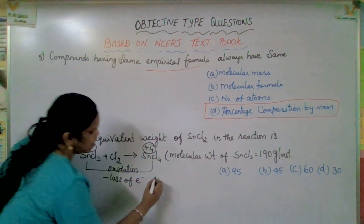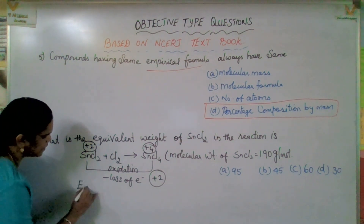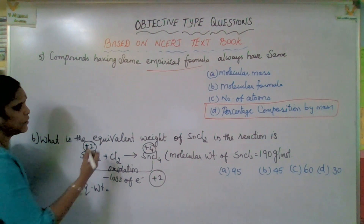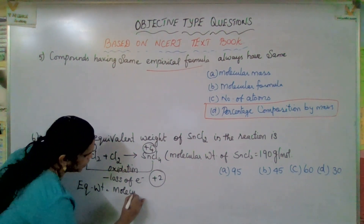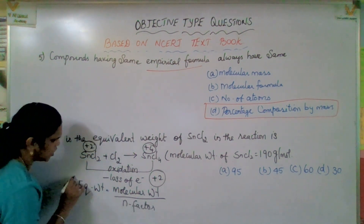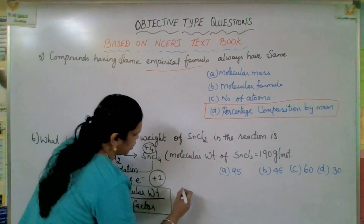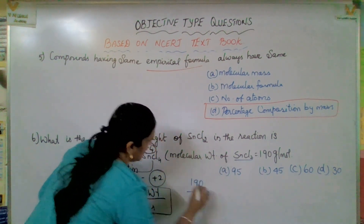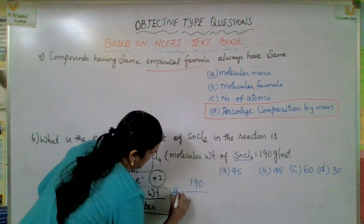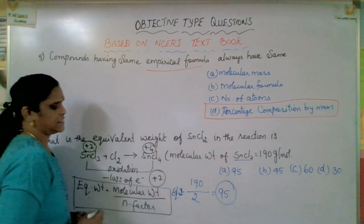That means 2 electrons are involved. Now, equivalent weight equals molecular weight divided by N-factor. Molecular weight has already been provided in the question — it is 190. N-factor is how many electrons are involved, which is 2 — loss of electron. So equivalent weight equals 190 divided by 2, which is 95. That is the equivalent weight.